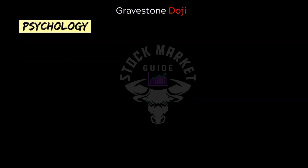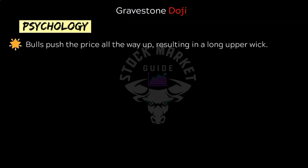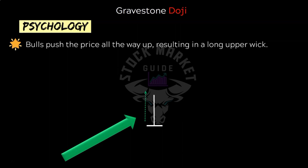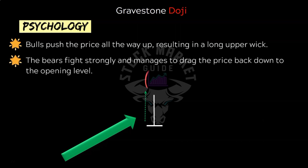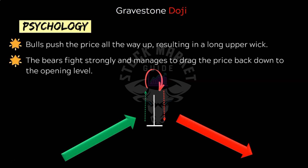The psychology behind gravestone doji: suppose the market is trending up and one day a gravestone doji is formed. This signals that buyers attempted to push the price above the opening but failed miserably. The price retraced to the same level as the opening, forming the long upper wick. The bulls are tired and bears are set to take control. If there is a gap down opening next day, there is high probability that the trend has reversed.